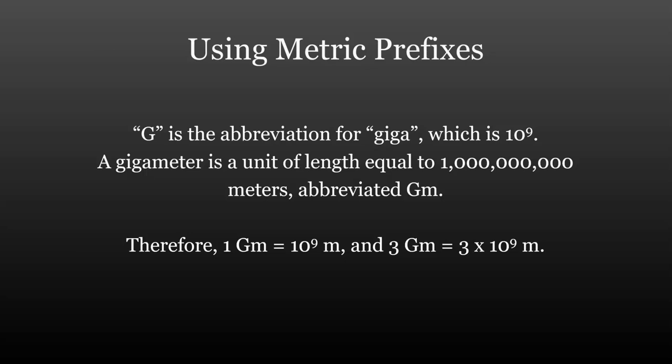A gigameter, abbreviated capital G lowercase m, then is equal to a billion meters. We can write a conversion factor stating that one gigameter is equal to 10 to the ninth meters and use that to convert measurements.